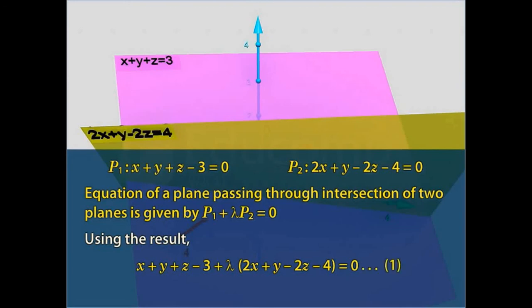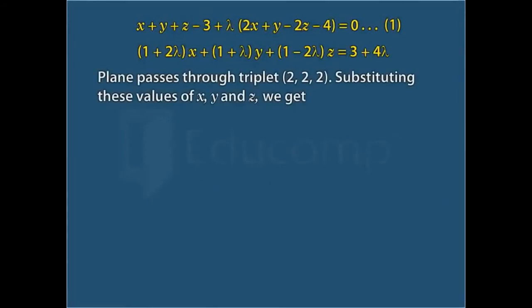Comparing and collecting like terms, we get 1 plus 2 lambda into x plus 1 plus lambda into y plus 1 minus 2 lambda into z equals 3 plus 4 lambda. This plane passes through the point (2, 2, 2). Substituting these values of x, y, and z in Statement 1, we get lambda equals 3 by 2.